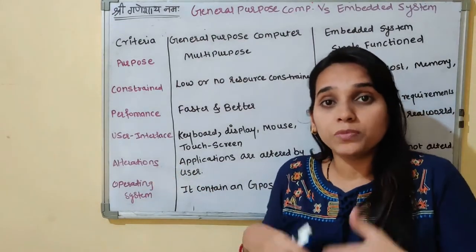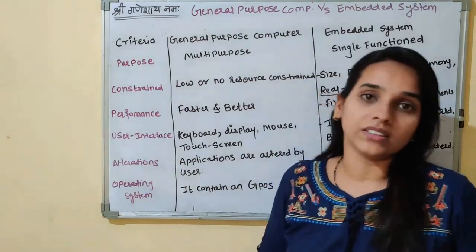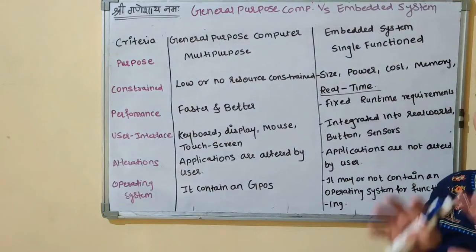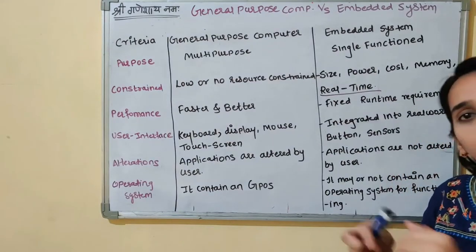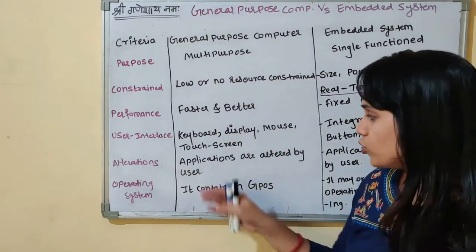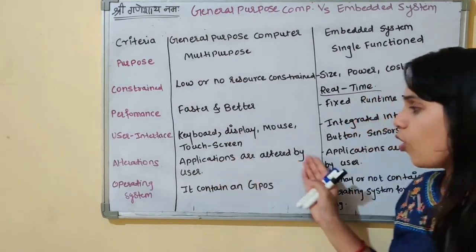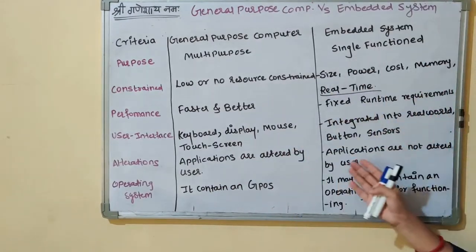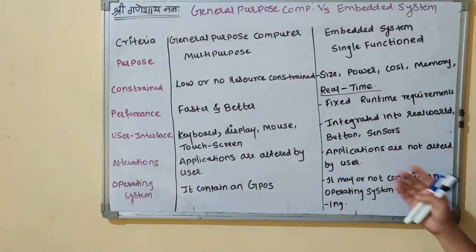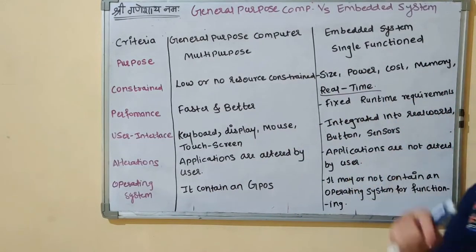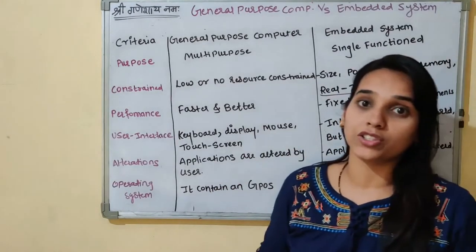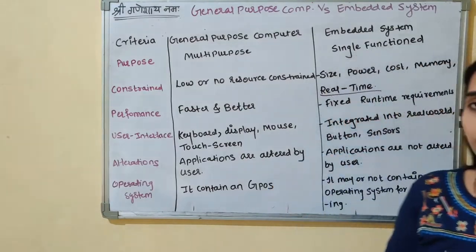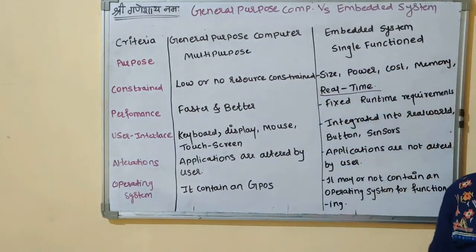Next is alteration, meaning changes. In a general-purpose computer, alteration is possible — applications can be altered by the user. Whereas in an embedded system, applications are not altered by the user; these applications are very static and we cannot change them.